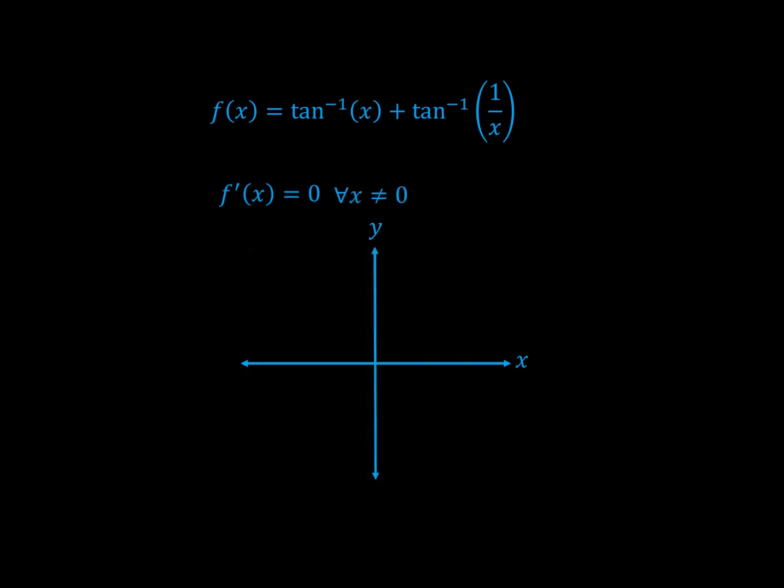There is a bit of a problem with x equals 0. Because there's a discontinuity there, and that's the only discontinuity, that's the only place our function can change. Because everywhere else, there's a 0 derivative. So the function has to look something like this. Two lines.